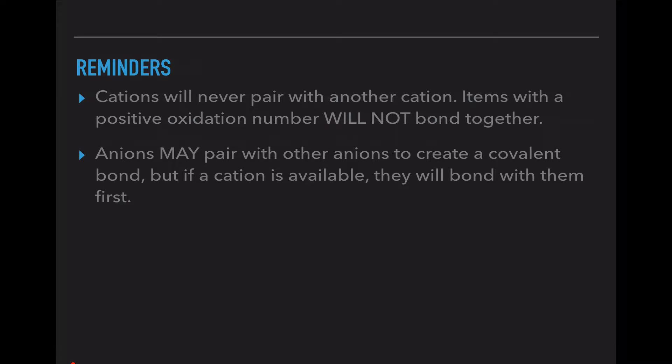So here are some reminders. Cations will never pair with another cation. Metals always want to kick out their electrons so they will not pair together. The positive oxidation numbers will not bond together. Anions may bond together. They may share their electrons with another anion to create a covalent bond. So if we pair up a cation ion with a new anion and we have two anions left over, they are allowed to bond.